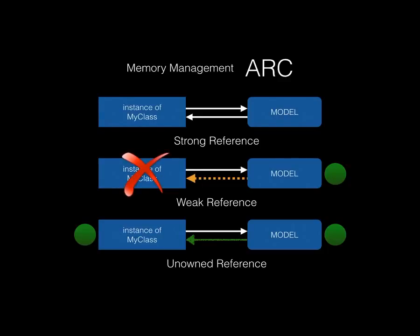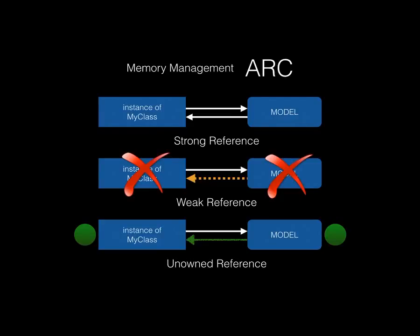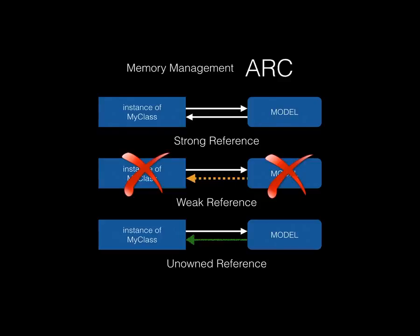Swift introduces a new reference type called `unowned`. It's a hybrid between weak and strong. If you unreference an instance of a class with an unowned reference from the model, there's no deallocation. But if you unreference both sides, unlike a strong reference, an unowned reference is not powerful enough to keep both alive — so they both deallocate and are destroyed, making it safe for your app.